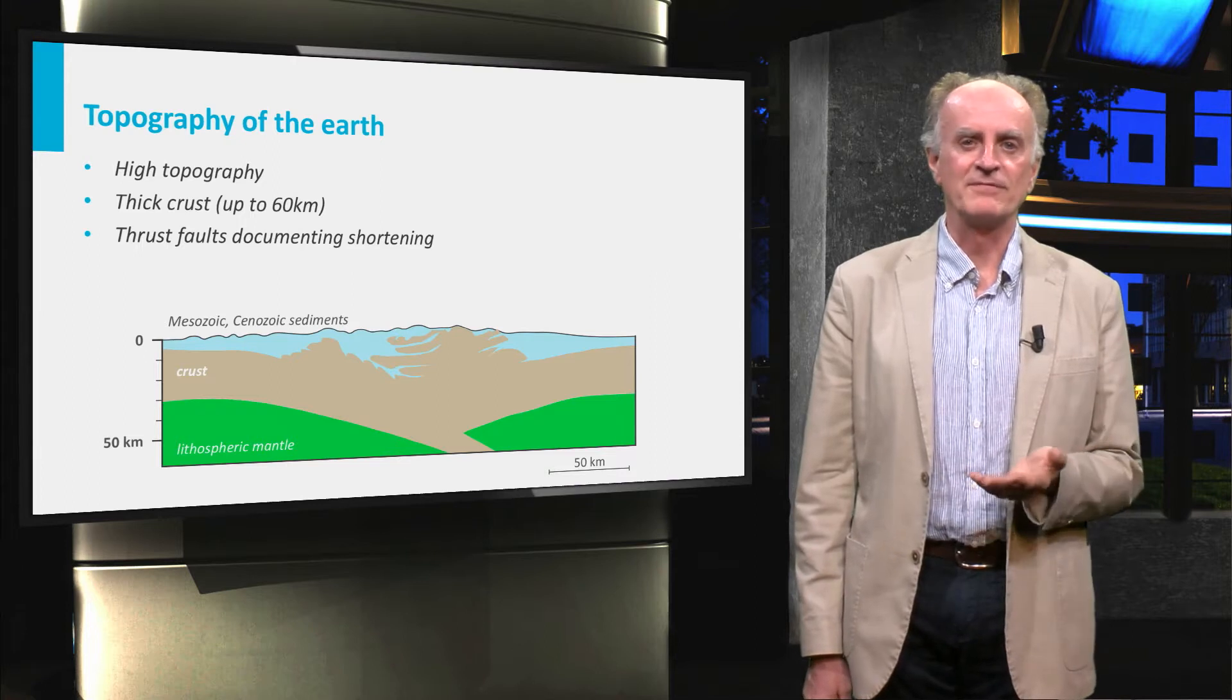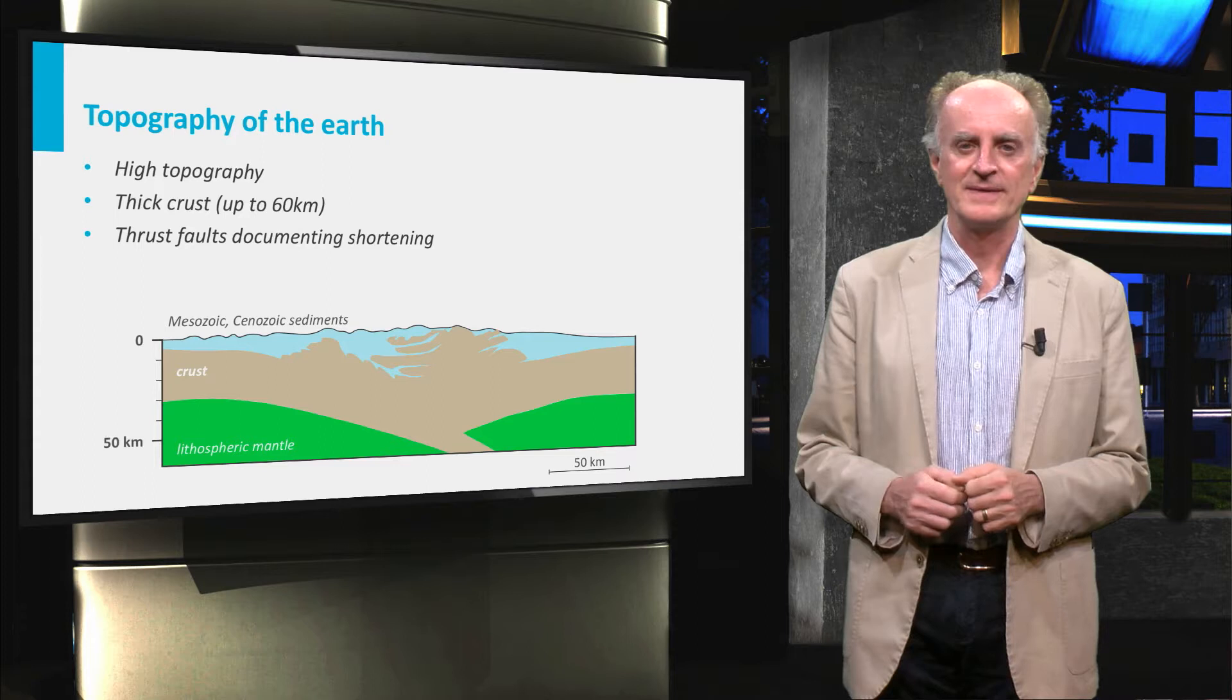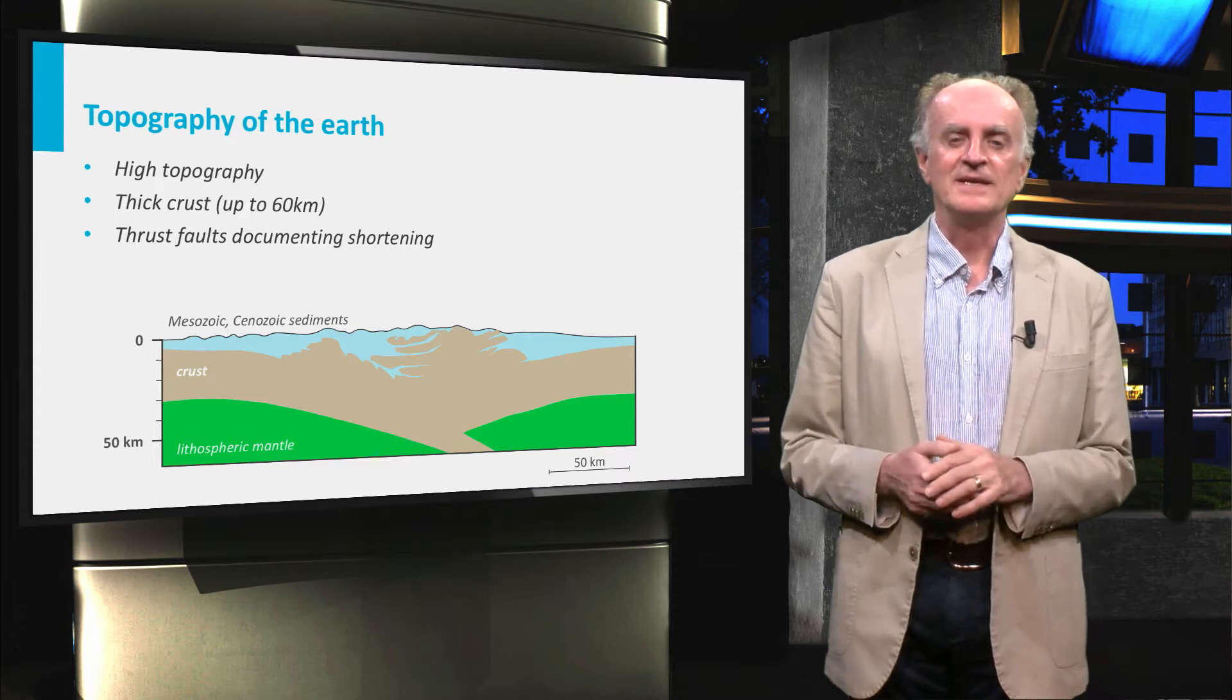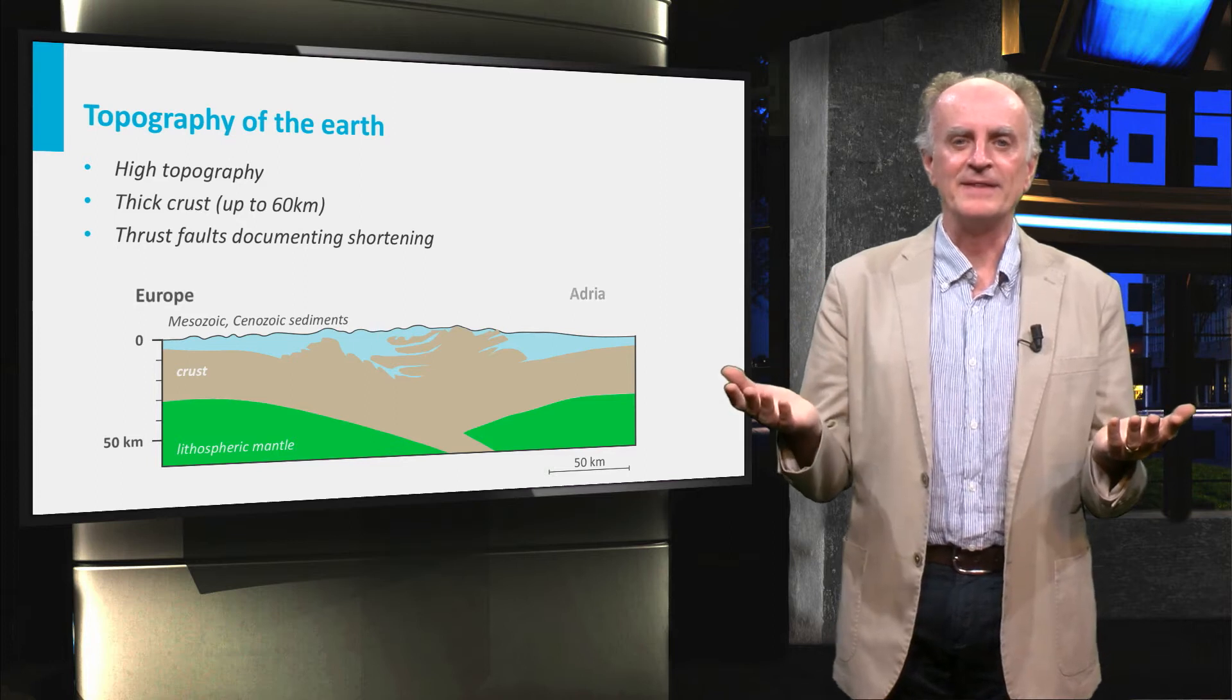Mountain belts like the Alps are formed by the collision between two lithospheric plates. In our case, these are the European plate in the north and the Adriatic plate in the south.